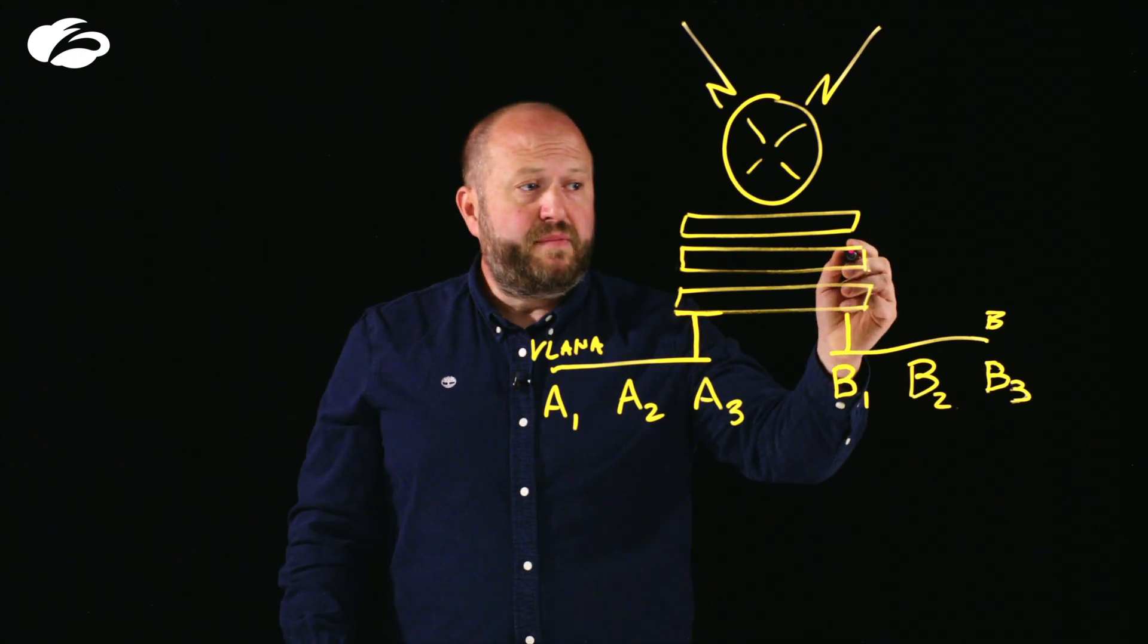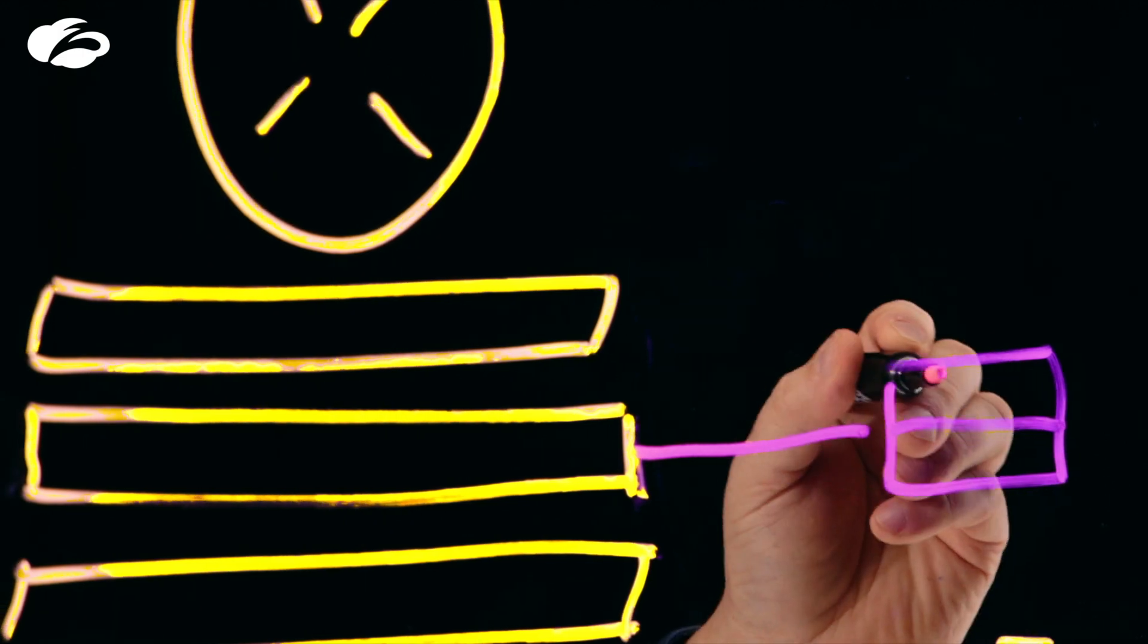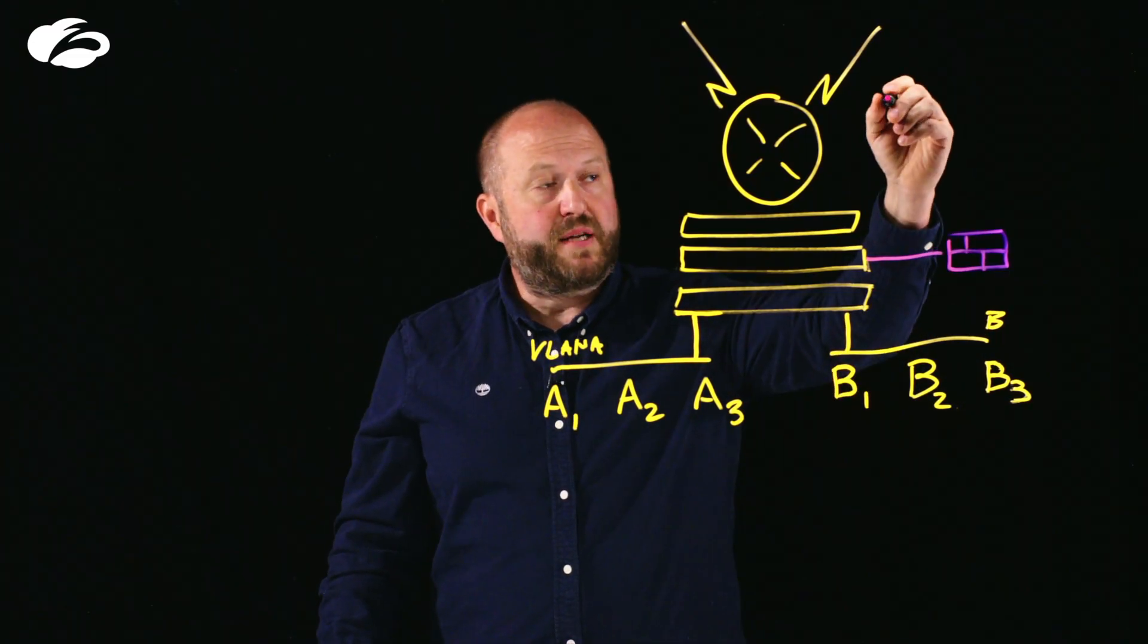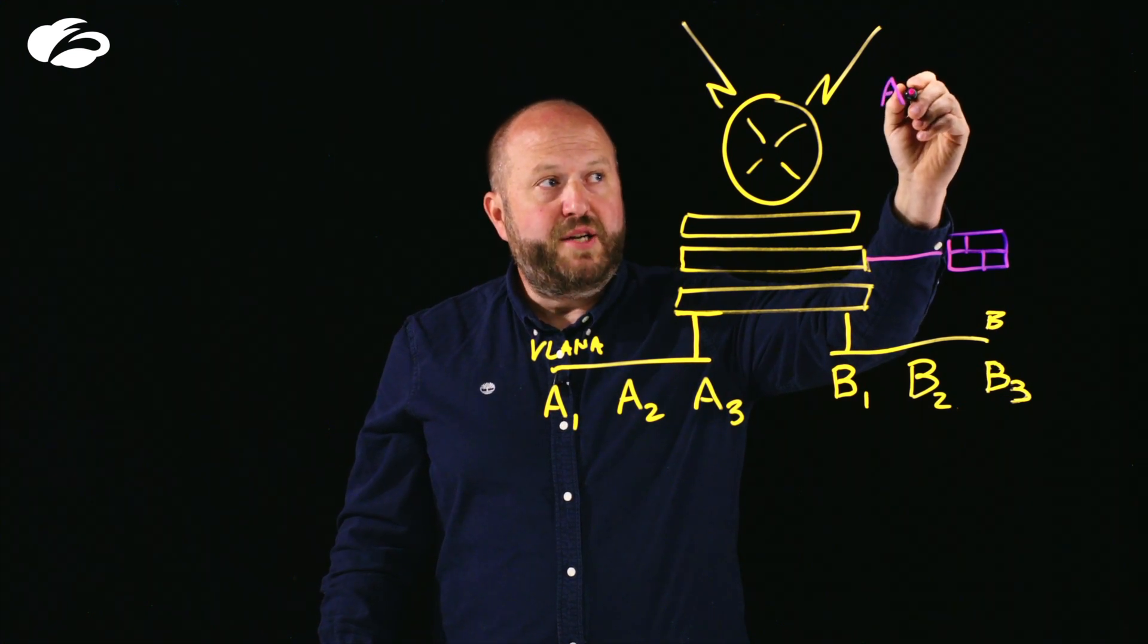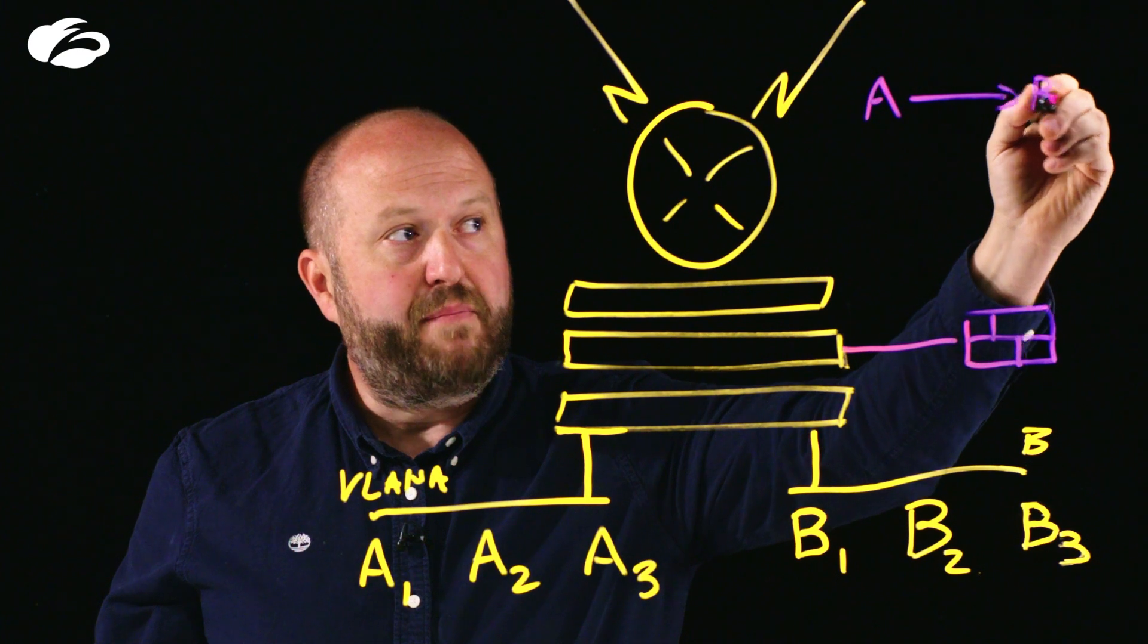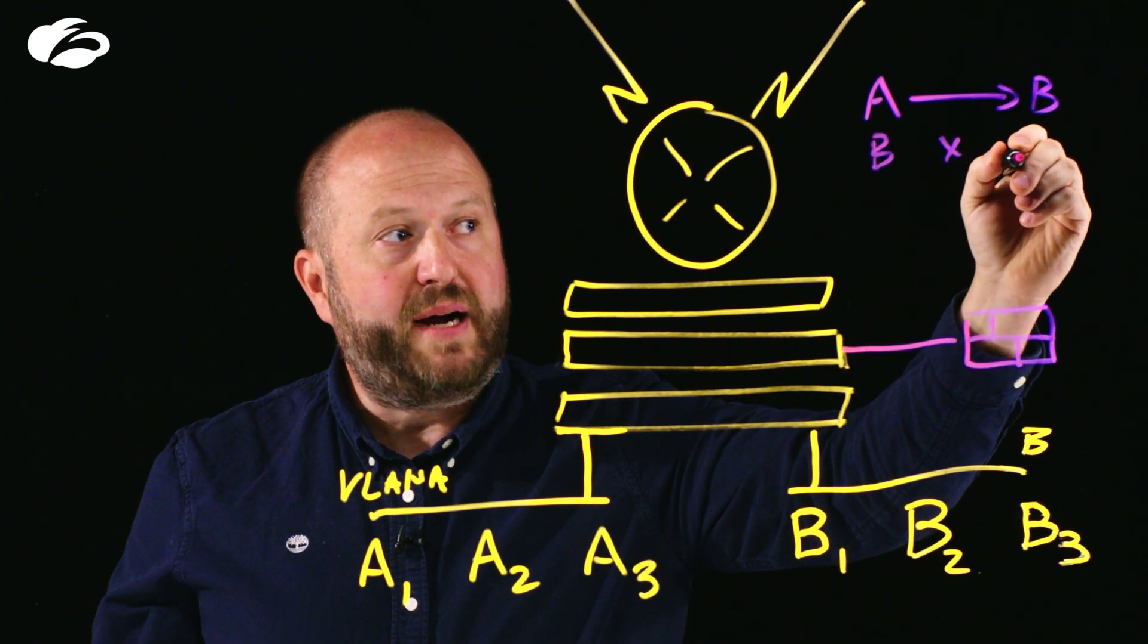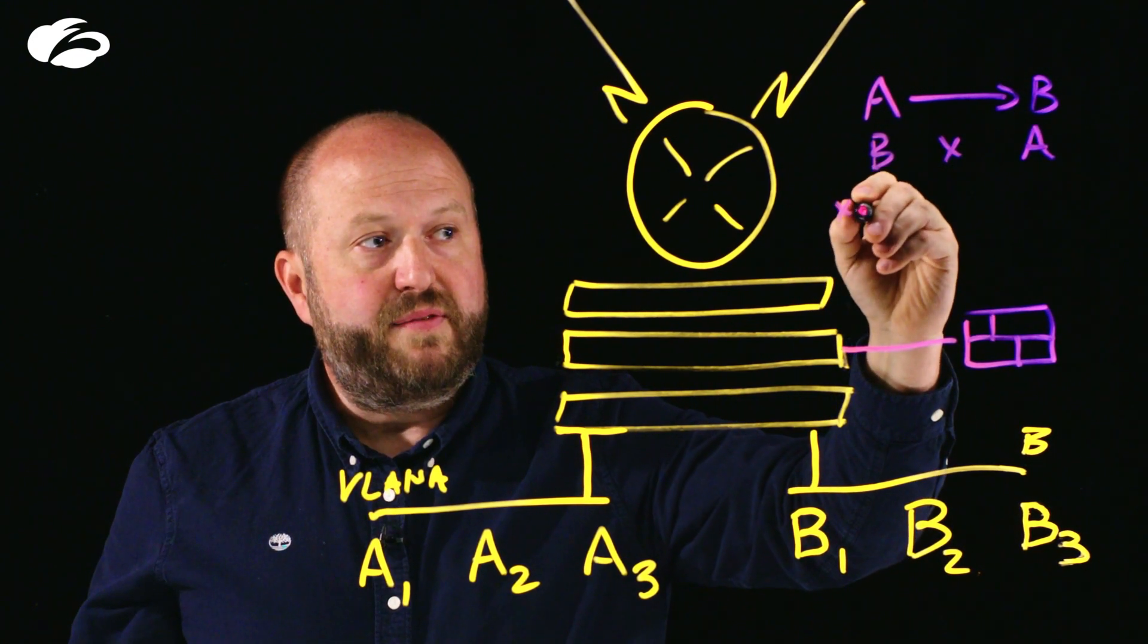So generally, companies have deployed segregation by adding firewalls into the network. On these firewalls, we tend to have fairly complicated rule sets, but effectively saying VLAN A can initiate a connection to clients in VLAN B, but clients in VLAN B can't initiate connection back to VLAN A.